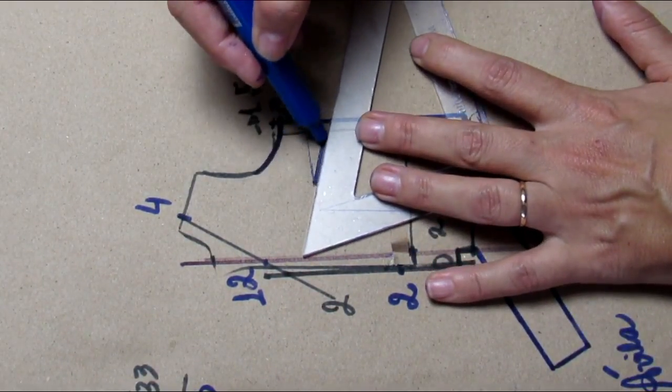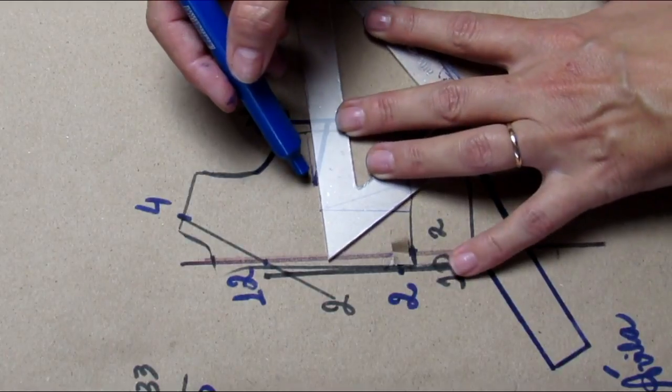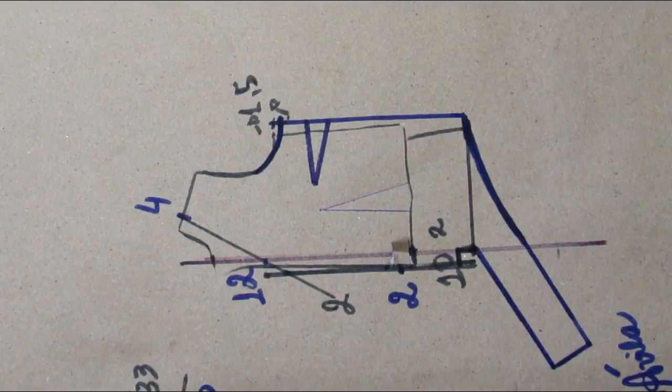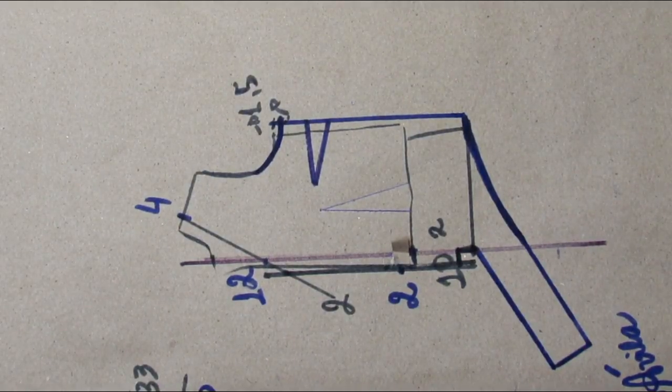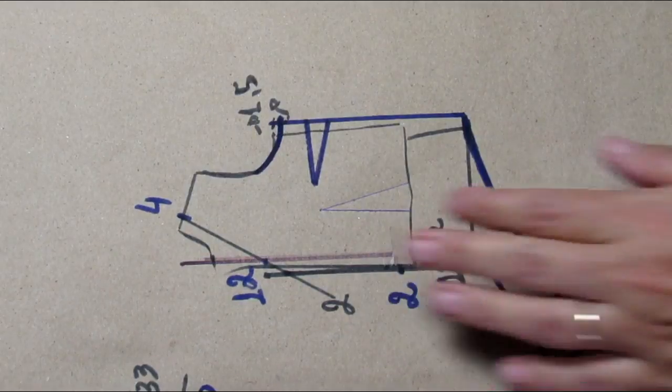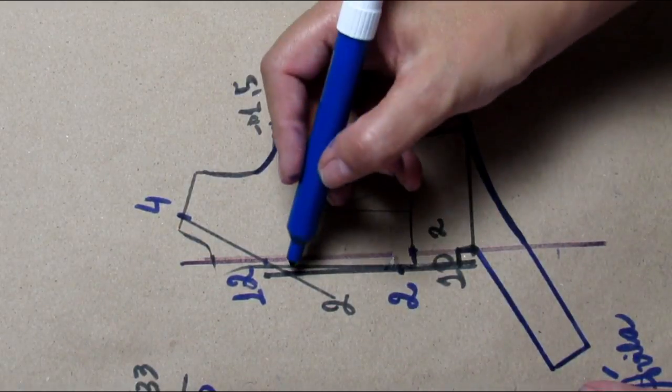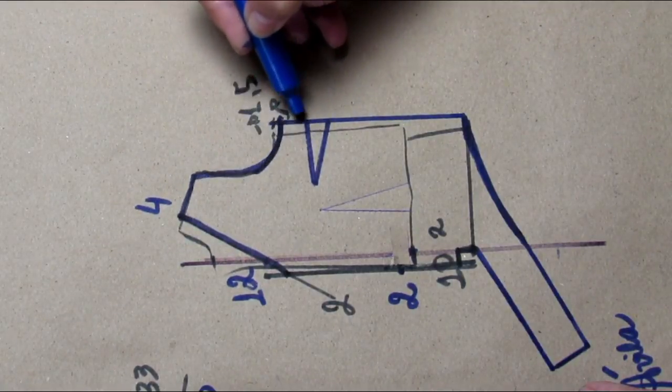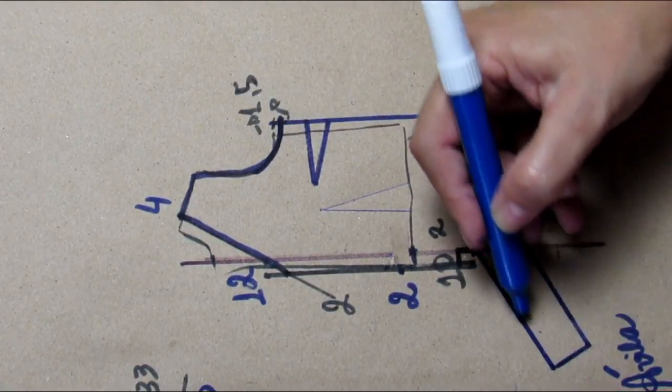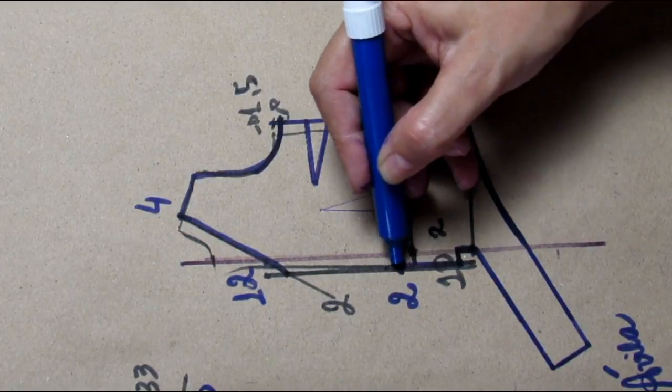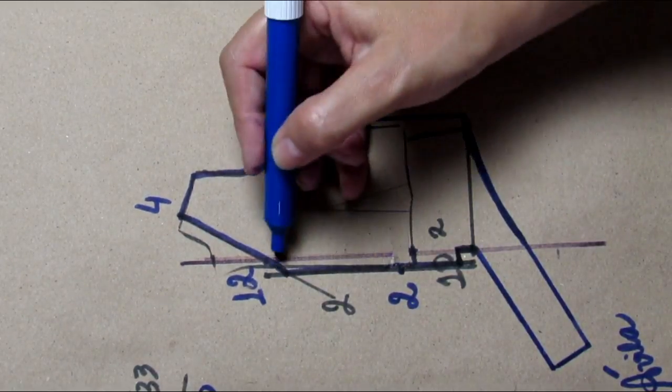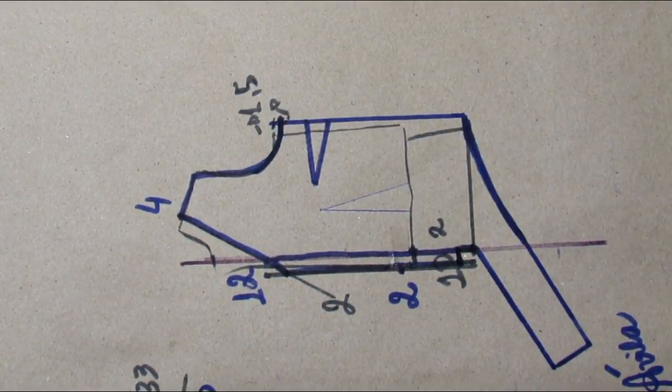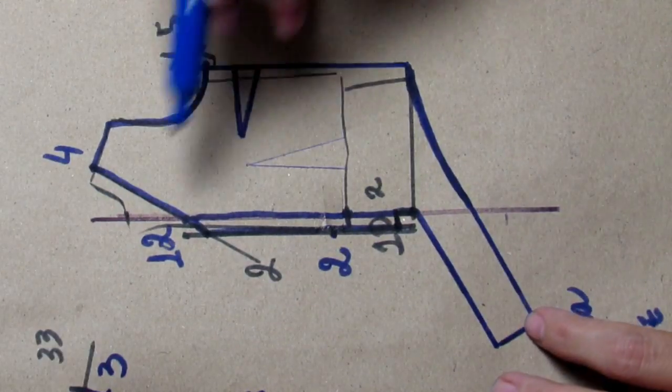Extend the side line of the bust dart to the new side seam of the blouse. We won't close the waist dart, so disregard it. So that's the shape of the blouse - the neckline and tie part are done. We made the armhole alteration and button overlap. This line will be the center front line, and this outer line is the overlap line.